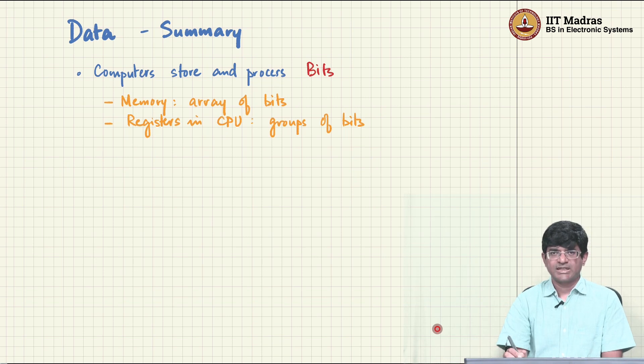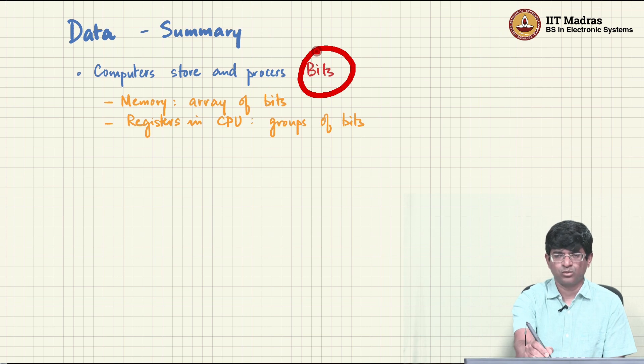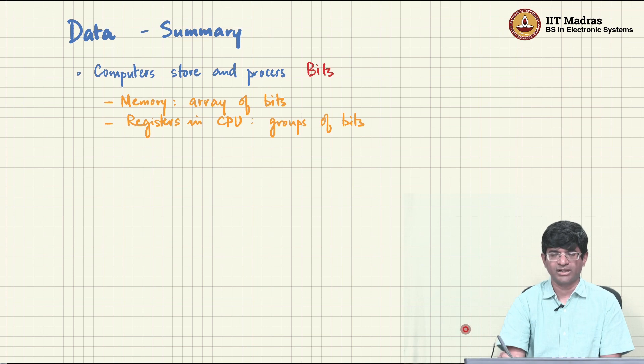So let us summarize all our discussion of data representation up to this point. The main thing is that computers store and process bits and nothing but bits, zeros and ones. Memory is an array of bits, the registers inside a CPU are groups of bits, and everything that we have been discussing so far revolves around how do we use those bits in a meaningful manner.